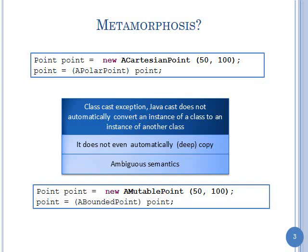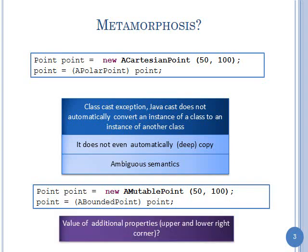Consider: I have a point assigned as a Cartesian point, and I say please convert that into a bounded point. The two classes don't take the same constructors — a bounded point has extra variables and we don't know how to initialize that. Java doesn't know the correspondence between the variables of one class and another. It can't even figure out if a method halts, let alone convert one class into another. What should be the value of additional properties like 'upper' and 'left'?